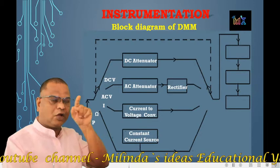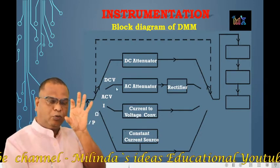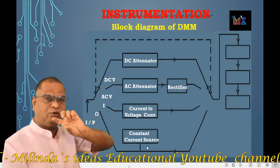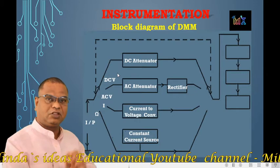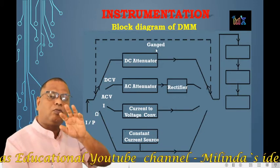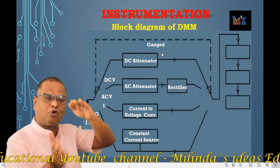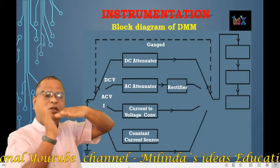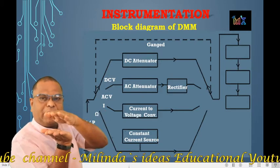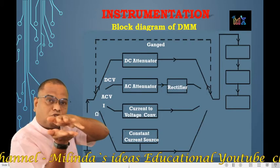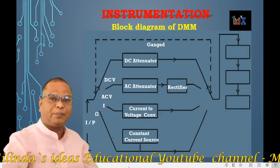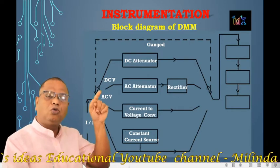The dotted line is connected to the output switch. There is an input switch and an output switch — they are ganged, meaning by using a single knob we control the position of two switches. The two switches are connected to a rotary switch, and that rotary switch is connected to another rotary switch. The output of each attenuator block is connected to the A to D converter. Suppose we are going to measure DC voltage, so the output of the DC attenuator should be connected to the A to D converter.